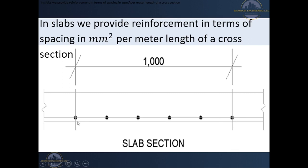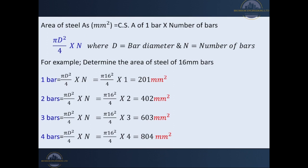So we reduce the bars by one. By counting we have six bars, and when we reduce one — which is the summation of the half that is out on each side — we have five bars. Those are the ones we use to determine the area of steel in that slab cross-section.